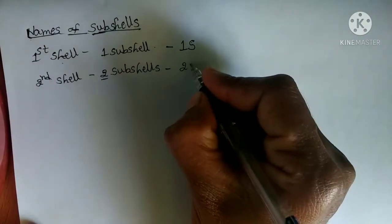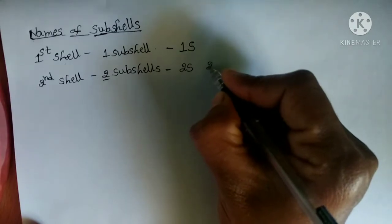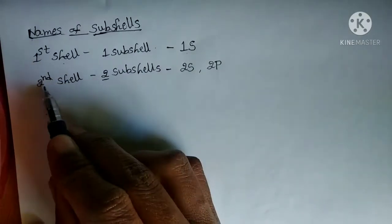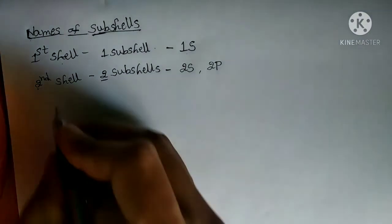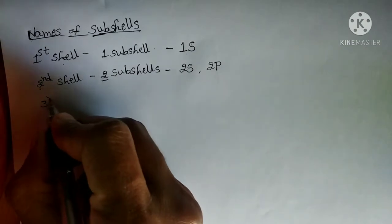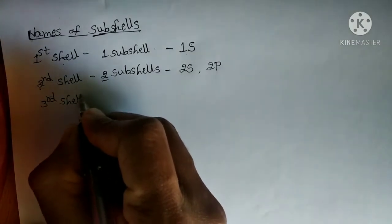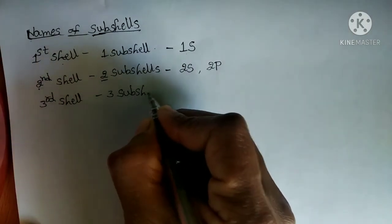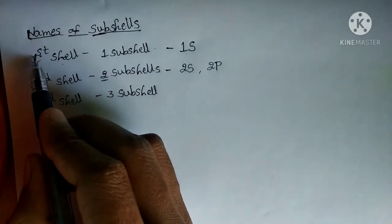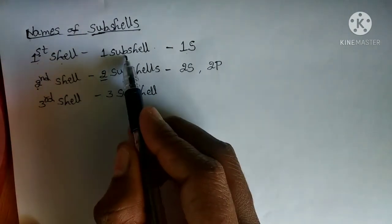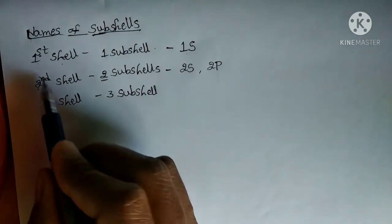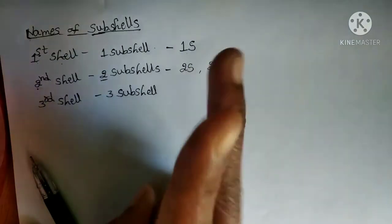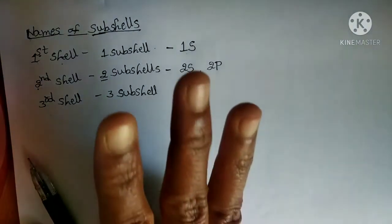The two subshells in the second shell are named 2s and 2p. Next, in the third shell how many subshells are present? Three subshells — because the shell number equals the number of subshells. The first shell contains one subshell, the second shell contains two subshells, and the third shell has three subshells.